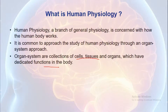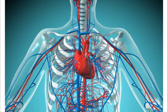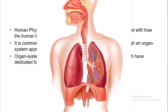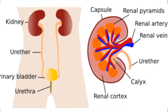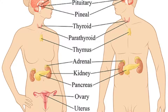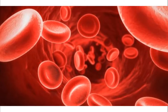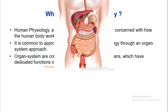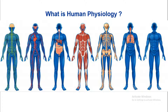Human physiology consists of a number of systems, for example: the nervous system, cardiovascular system, respiratory system, neuromuscular system, excretory system, reproductive system, endocrinal system, special senses, blood physiology, and the gastrointestinal system. All these are the different types of systems which are connected with each other.